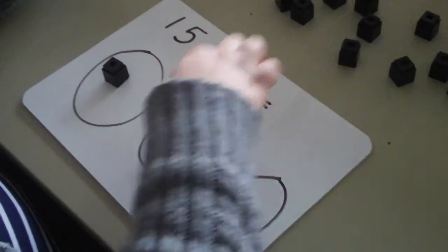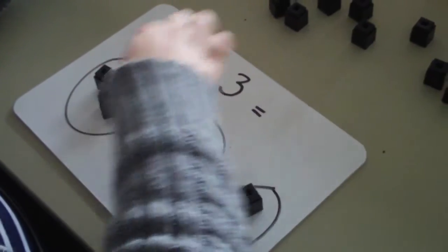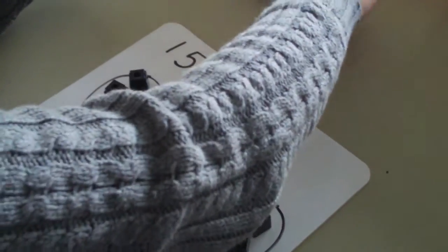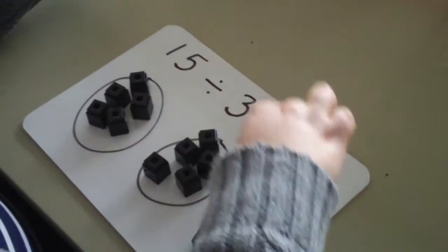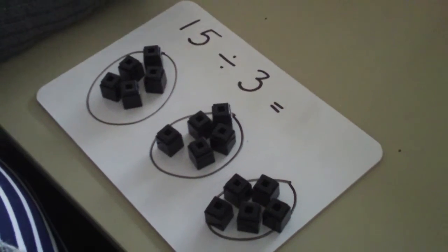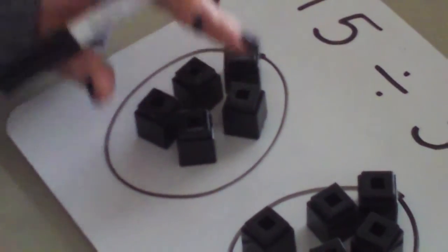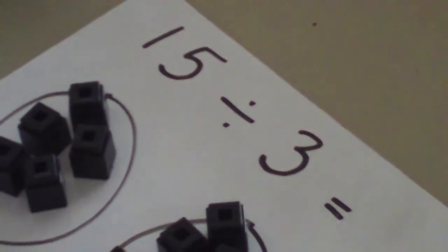1, 2, 3, 4, 5, 6, 12, 13, 14, 15. How many is in each group? 1, 2, 3, 4, 5. There's 5 cubes in each group. So 15 divided by 3 is 5.